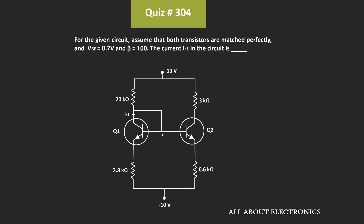Here, these two transistors are matched perfectly and for these transistors, the value of the voltage Vbe is equal to 0.7V, while β is equal to 100. So let's find the value of IC1 for the given circuit.